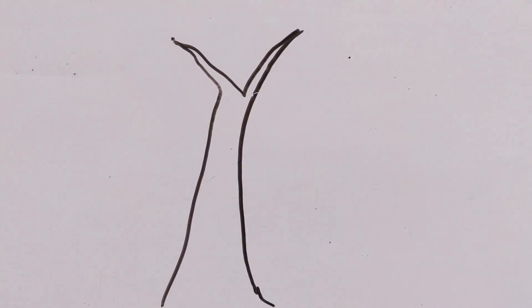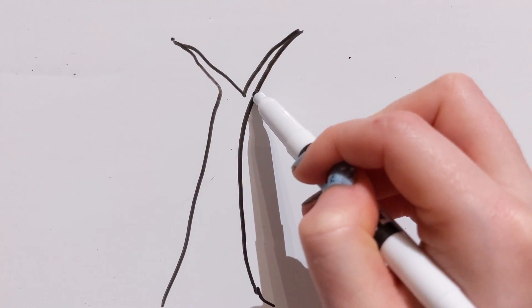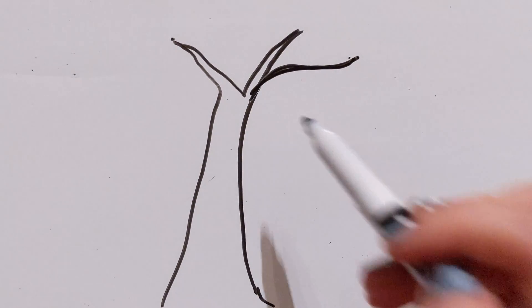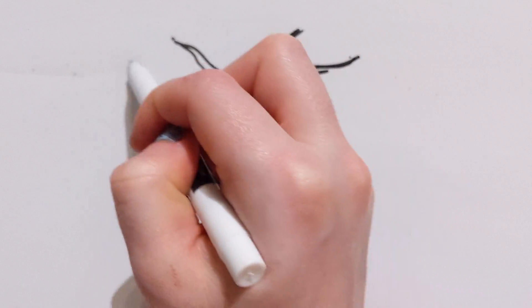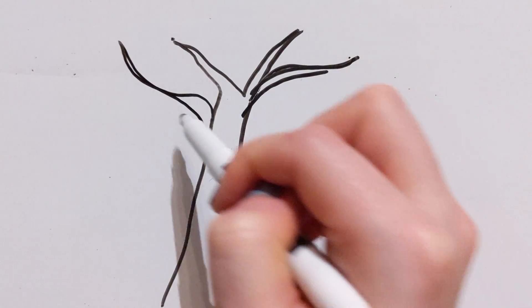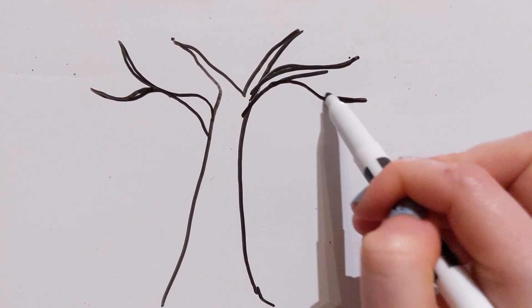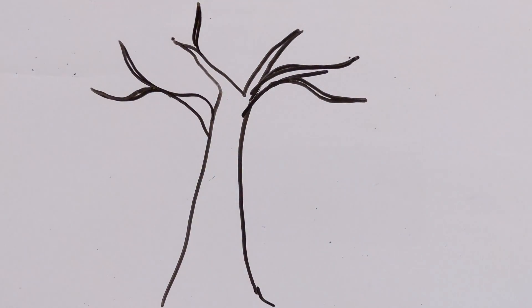And this is just the beginning. You can make as many branches as you want and you want to make at least five. So you can make them nice and long. I like to do a lot of curvy branches.